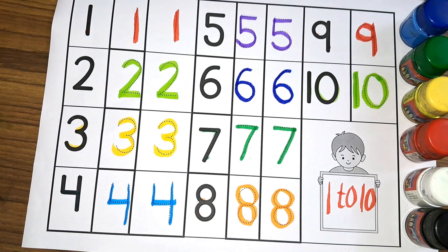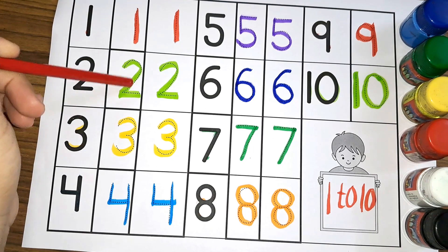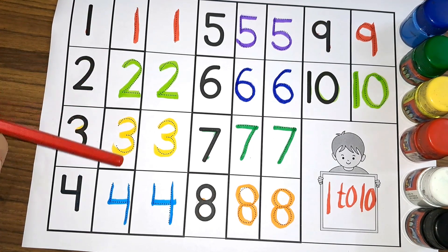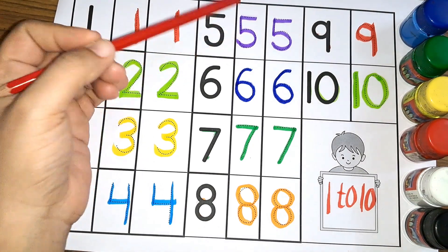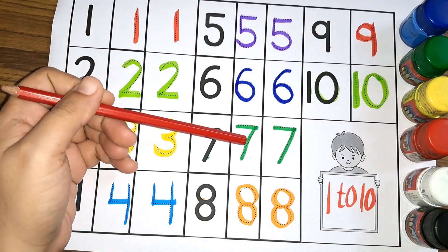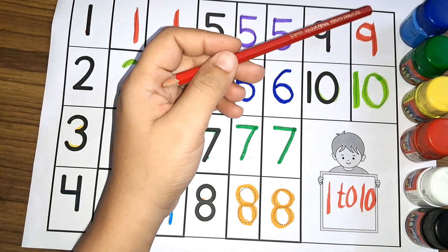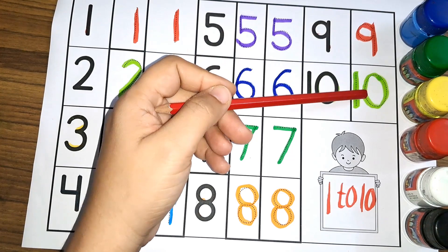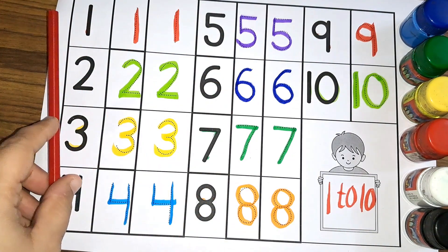We have used red color, light green color, yellow color, light blue color, purple color, dark blue color, dark green color, orange color, red color, and light green color. These are the numbers one to ten.